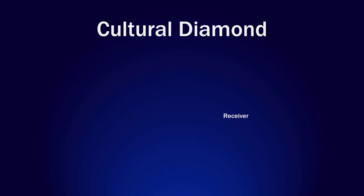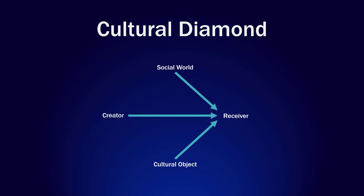It showed how the same element in the cultural diamond — for instance, the receiver — not only receives, experiences, or consumes the cultural object, but may also be influenced by what is going on in the broader social world, in addition to any interactions they may have with the original creator or creators of the cultural object itself.